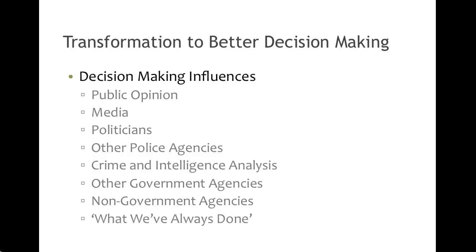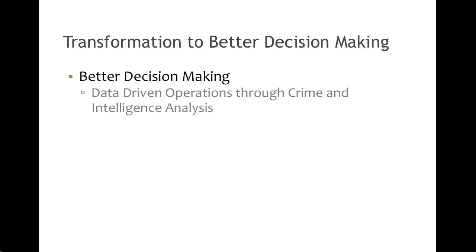And finally in law enforcement, a lot of decision making happens around what we've always done — what's been done in the past — and if it's been successful in the past, then why should we change it moving forward? All of the things you see here are true decision-making influences. They can pull us in directions in a variety of different ways. As we approach crime and intelligence analysis, it's really about doing data-driven operations to make better decisions.